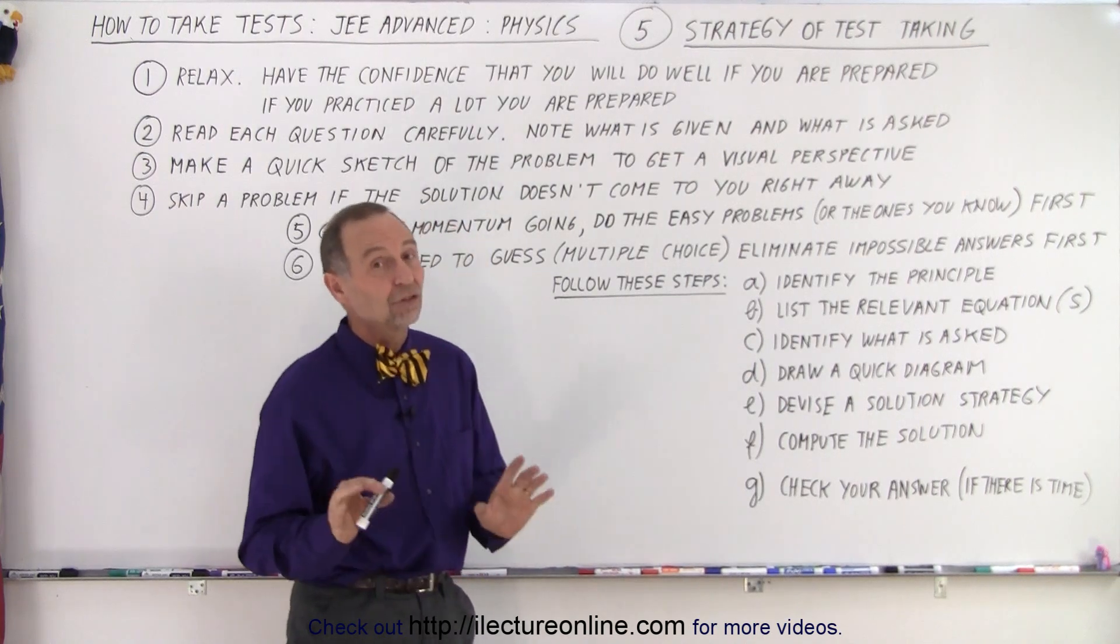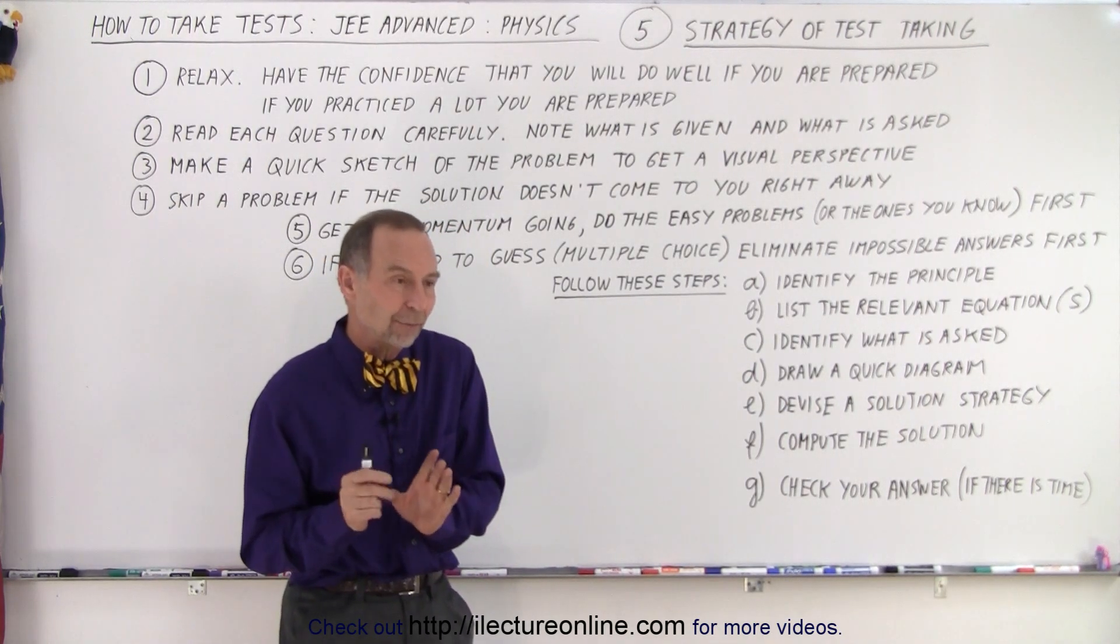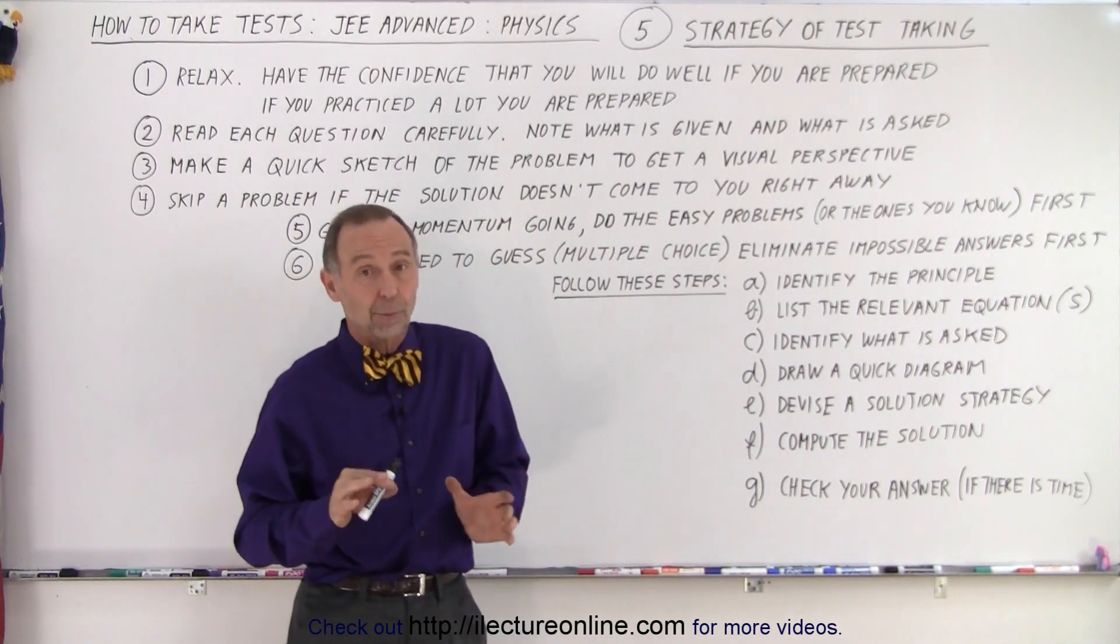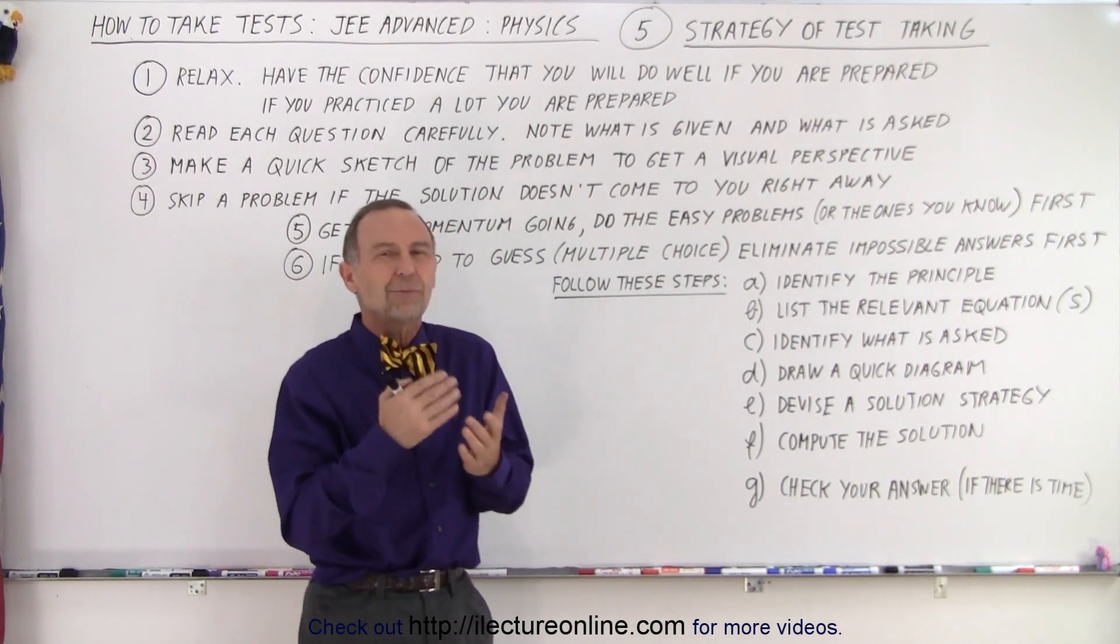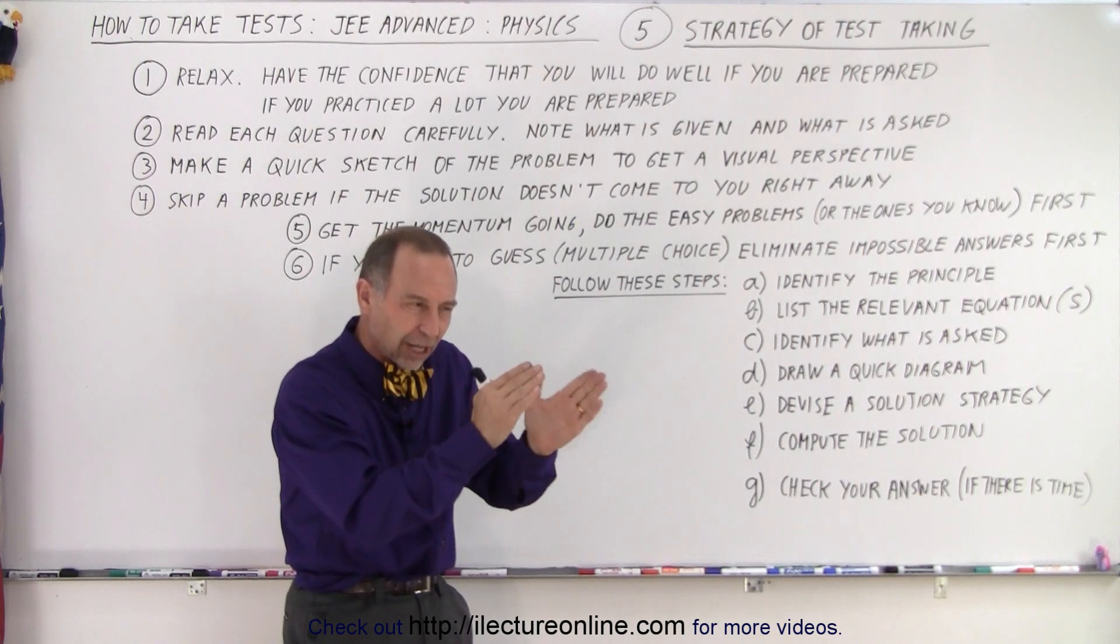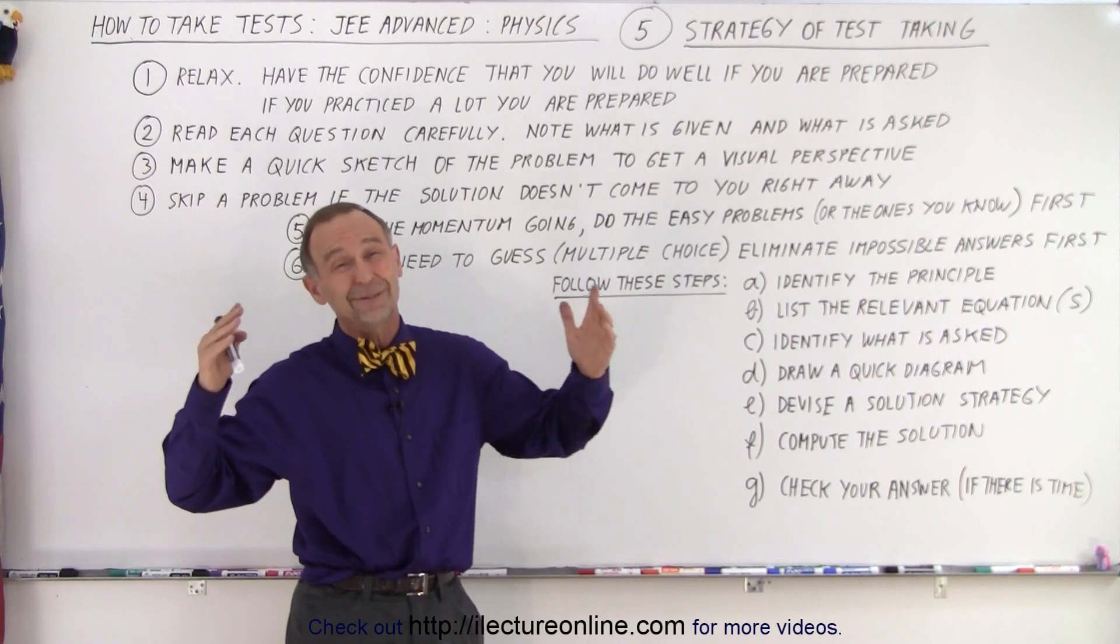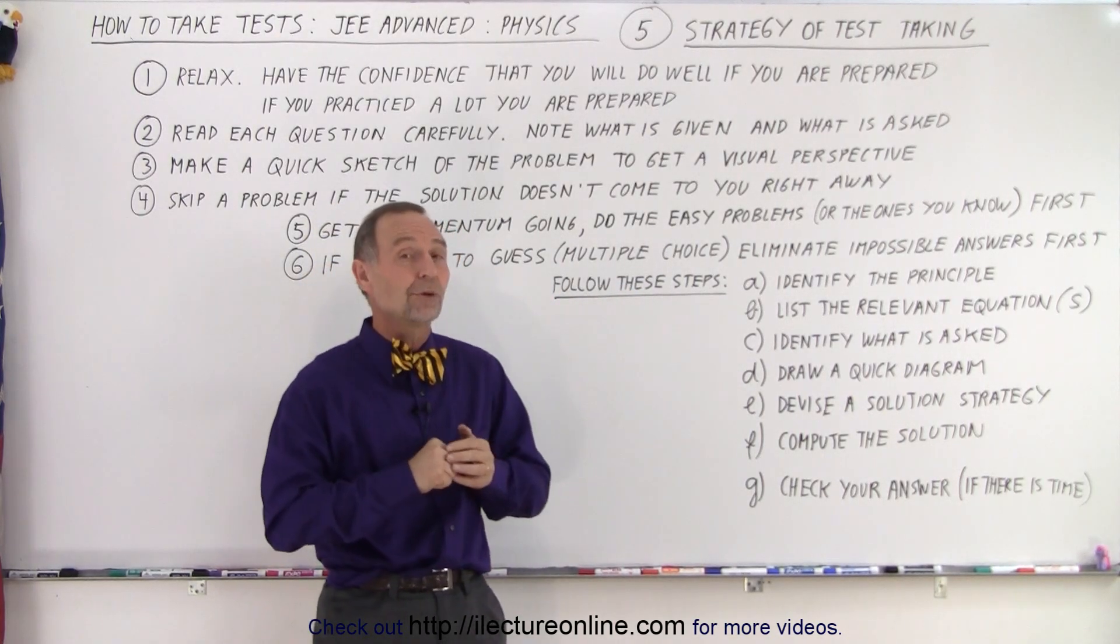And at the end, if there's time left, make sure you check the answer. Sometimes you can check the answer by doing it in a different way. Sometimes you can check the answer by doing the problem over again. Or sometimes you can do a quick estimate or rough estimation where you just kind of throw a few numbers together and go, okay, it's got to be somewhere between 5 and 10. And if your answer is 100, then you realize, oh, I'm probably not correct and I probably need to do this one over again.